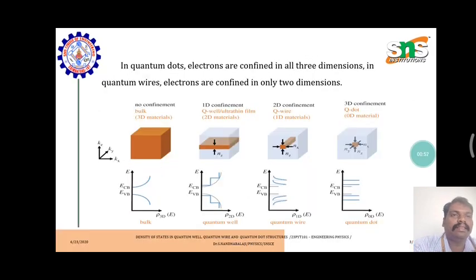These increases can be calculated graphically. In quantum dots, electrons are confined in all 3 dimensions. In quantum wires, electrons are confined in only 2 dimensions.